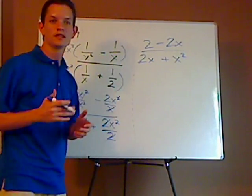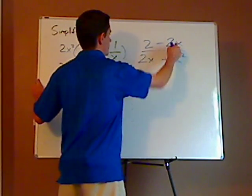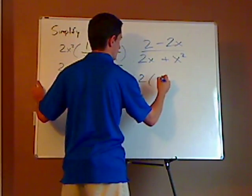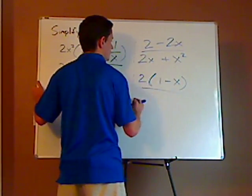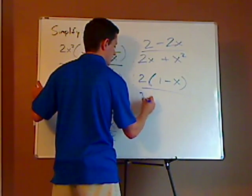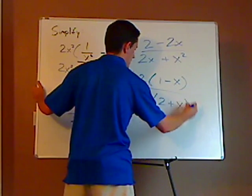Now just in case, you always want to factor. So here, GCF, there's a GCF of 2, so you're left with 1 minus x in those parentheses. Here, your GCF is x, so that would be 2 plus x.